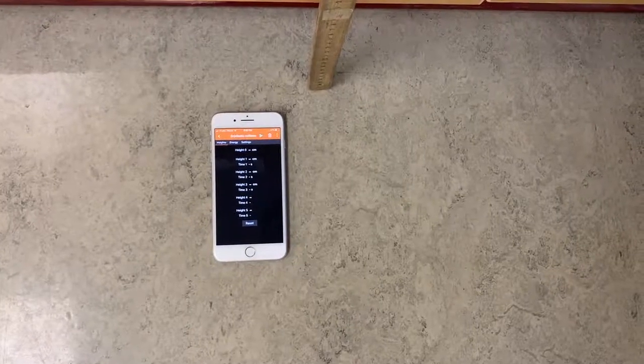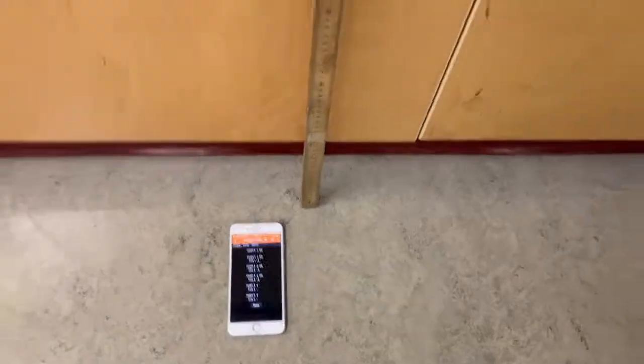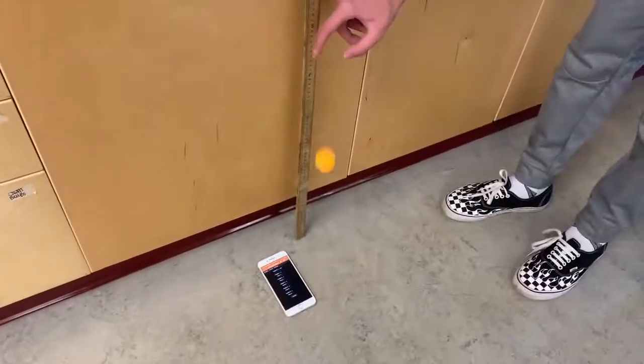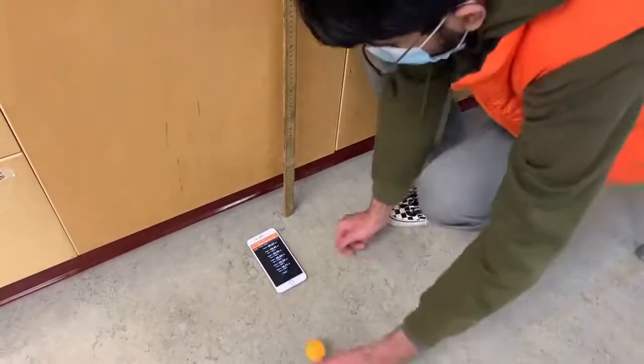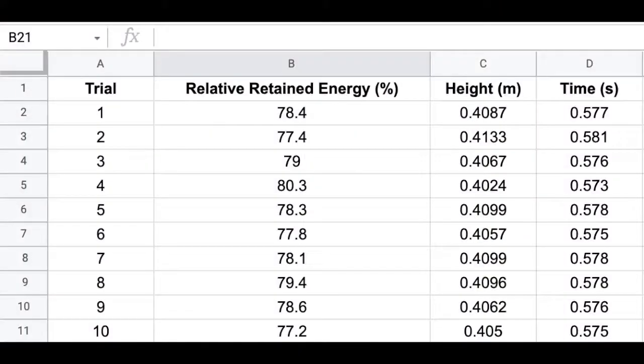This experiment involves energy. We have a vertically placed meter stick as well as a ping pong ball dropped from 0.5 meters. Each drop is detected by the elastic collision PhyPhox tool on the phone. As we see in our first column, we have completed a total of 10 trials. In the next two columns, we have our data retrieved from PhyPhox itself. We have measured both the height in meters and time in seconds of the initial ball drop for a total of 10 trials.